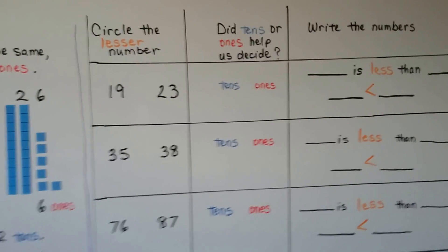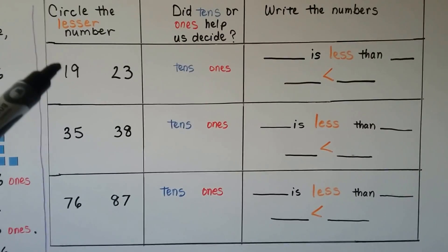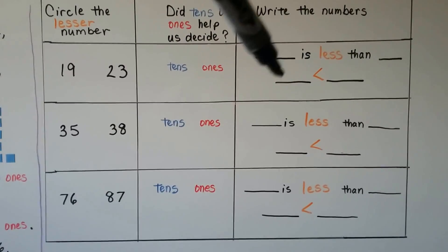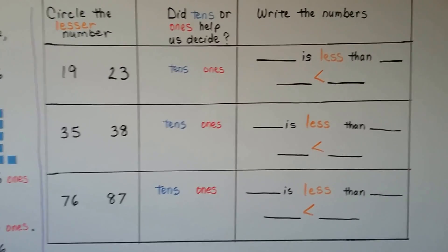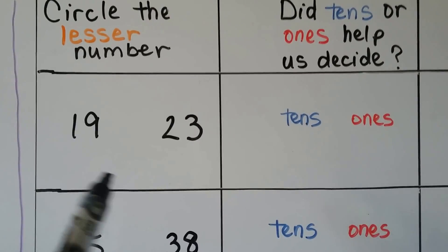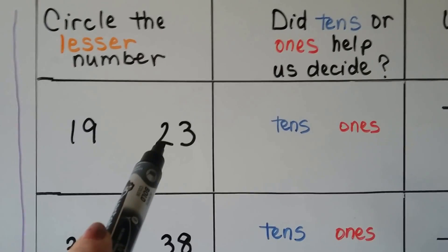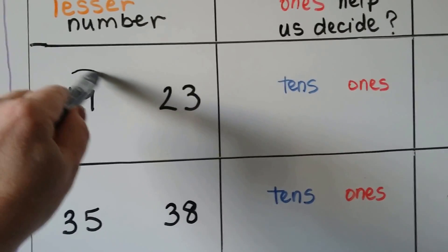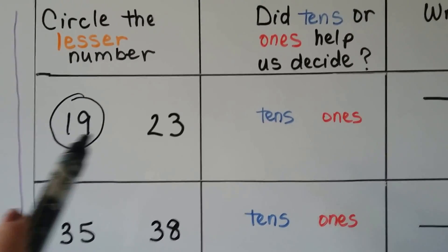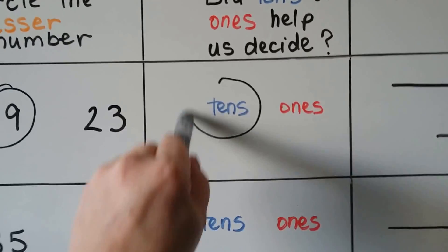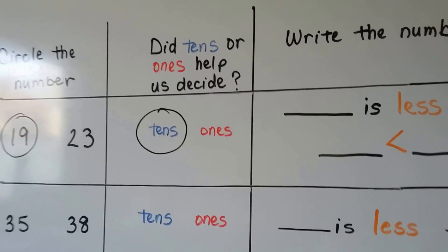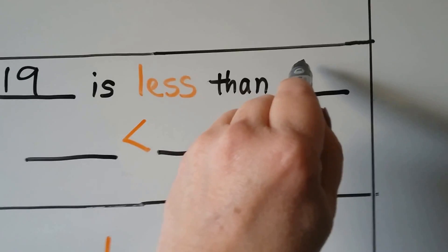Here we have a chart. It says circle the lesser number, then circle whether the tens or ones helped us, and fill in the blanks to make it true. Which one is lesser: nineteen or twenty-three? We look at the tens place first. Nineteen has one ten, twenty-three has two tens. Two is bigger, so nineteen is less than twenty-three. We used the tens place — this only has one ten. Nineteen is less than twenty-three.